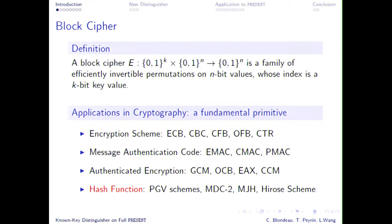There are many modes to do encryption, also message authentication or MAC. You can do them both together with authenticated encryption. One of the applications of a block cipher that is a bit more relevant for this talk is using a block cipher to construct a hash function, or more precisely, a compression function that can later be used itself to define a hash function. If you want to do that, you can use the PGV schemes, and if the block size is a bit too small, you might want to use a double block construction such as the HiRose scheme.